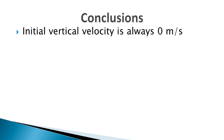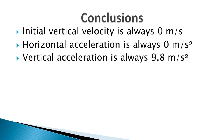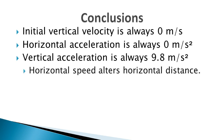A couple of conclusions: initial vertical velocity is always zero meters per second. As soon as the object leaves the barrel of the cannon, the gun, or the bow, it's moving at zero meters per second vertically — it has just started to fall and accelerate towards the ground. Horizontal acceleration is always zero meters per second squared because it moves at constant velocity horizontally. Vertical acceleration is always 9.8 meters per second squared — the second it leaves the barrel, it accelerates toward the ground starting from an initial vertical velocity of zero.